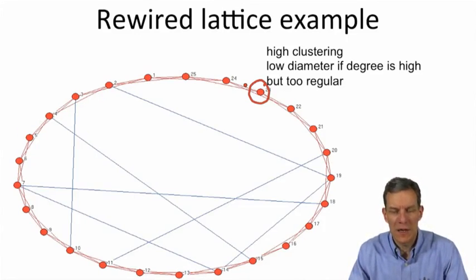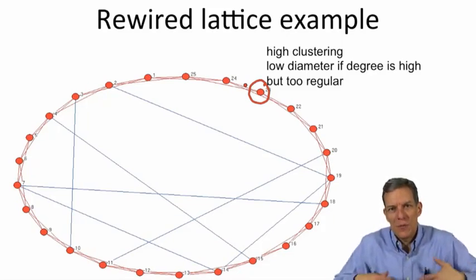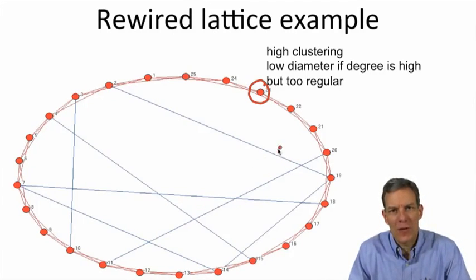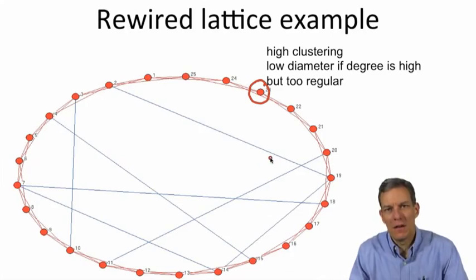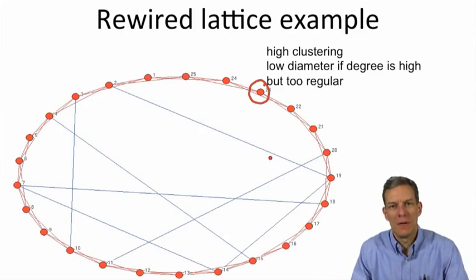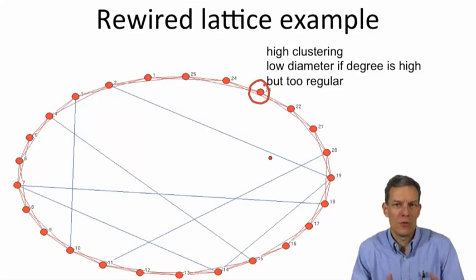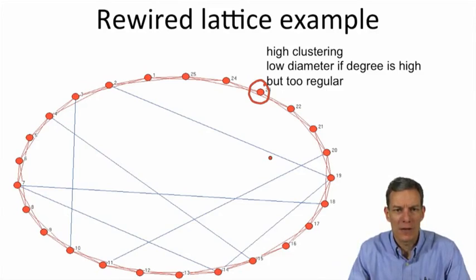But what it does do is it begins to answer some of the questions so that if for some reason we had high clustering to start with in terms of some local level and then we just add a few random links on top of that, we can get at least two features in common. It gives us some explanation of how these things can begin to arise in common. You don't need many random links to actually shorten average path length dramatically.